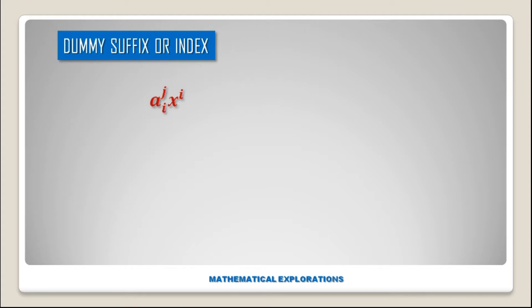A dummy index can be summed over — that is, it can take values from 1 to n. A dummy index can also be replaced by any other suffix, provided that suffix is not already occurring in that term.